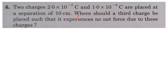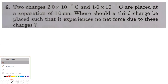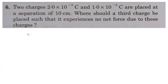Let us solve Concepts of Physics textbook problem — a continuation. Two charges, 2×10⁻⁶ coulomb and 1×10⁻⁶ coulomb, are placed at a separation of 10 centimeters. Where should a third charge be placed so that it experiences no net force due to these charges? We define q1 = 2×10⁻⁶ C, q2 = 1×10⁻⁶ C, separated by 10 cm.